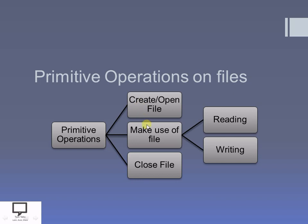After creating or opening a file, you will make use of that file. You will read that file for some purpose, and after performing the reading operation, you can also perform the writing operation on the file. After performing these operations, you will close the file as well. So the main primitive operations we can perform on a file are: opening the file, reading data from the file, writing data to the file, and closing the file.